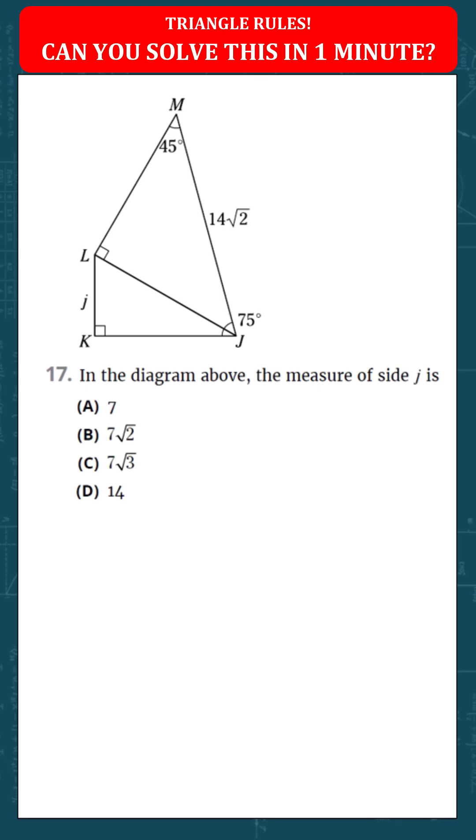In the diagram above, the measure of side j is - basically we're trying to find what is this j measure. Looking at this triangle first, MLJ right here, we see this is 90 degrees, 45, then this has to be 45.